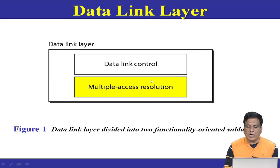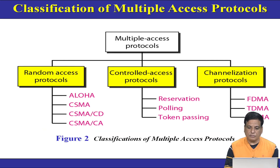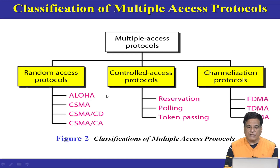Today we will study how to control multiple access in such a way that the probability of frame collisions is minimum. We classify multiple access protocols into three categories: first is random access protocols, second is controlled access protocols, and third is channelization protocols.